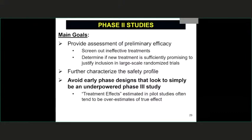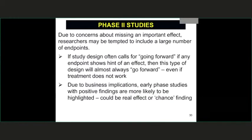In clinical research, particularly in neurology, it's pretty much a given that more things are going to fail than succeed. The number of things that have looked promising through phase one and phase two and then failed in phase three is actually quite depressing. Coming up with more rigid early phase designs that can fail, and if they succeed have met some criteria of success, is extremely important to justify the added cost and complexity of moving to phase three.